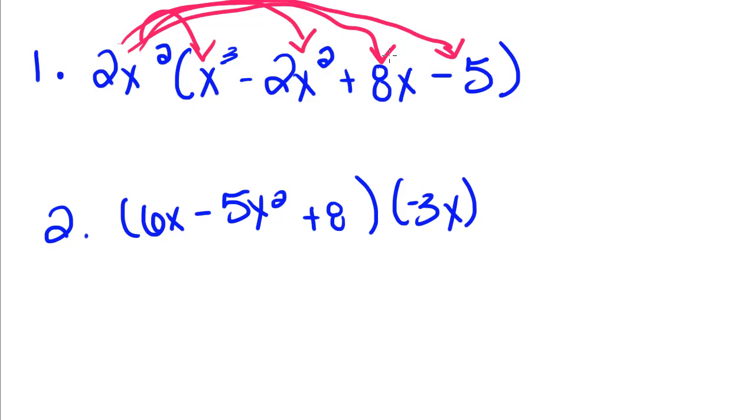This time, I'm not going to write out each term multiplied. I'm just going to multiply them. 2 times 1 gives us 2x squared times x to the third gives us x to the fifth, minus 2 times 2 is 4x to the fourth plus 2 times 8, 16x to the third minus 10x squared.